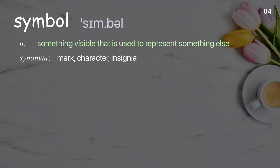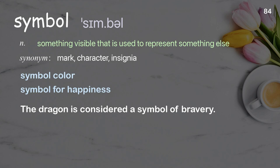Symbol. Something visible that is used to represent something else. Examples: symbol color, symbol for happiness. The dragon is considered a symbol of bravery.